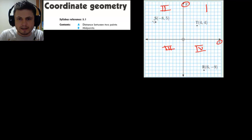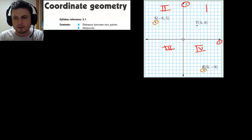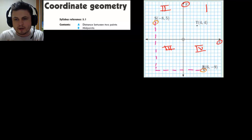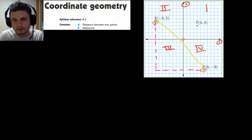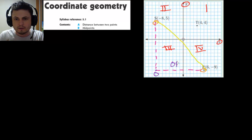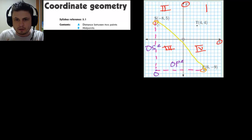Let's look at the distance between point S and point R. We're going to use a combination of geometry and algebra — specifically Pythagoras' theorem. If we draw an imaginary right triangle, what we're actually looking for is the hypotenuse. Using Pythagoras, we have OP squared plus OS squared, which gives us the distance SP squared.